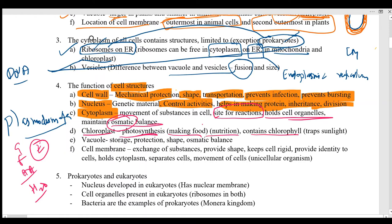The chloroplast contains chlorophyll, which traps light energy from light sources. In higher classes you will learn that different intensities, wavelengths, and colors of light have different effects on photosynthesis.